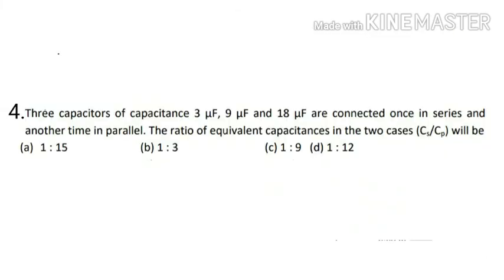Question number four: three capacitors of capacitance 3 microfarad, 9 microfarad, and 18 microfarad are connected once in series and another time in parallel. The ratio of equivalent capacitance in the two cases, Cs upon Cp, will be what? Four options are given and we have to calculate the correct answer.